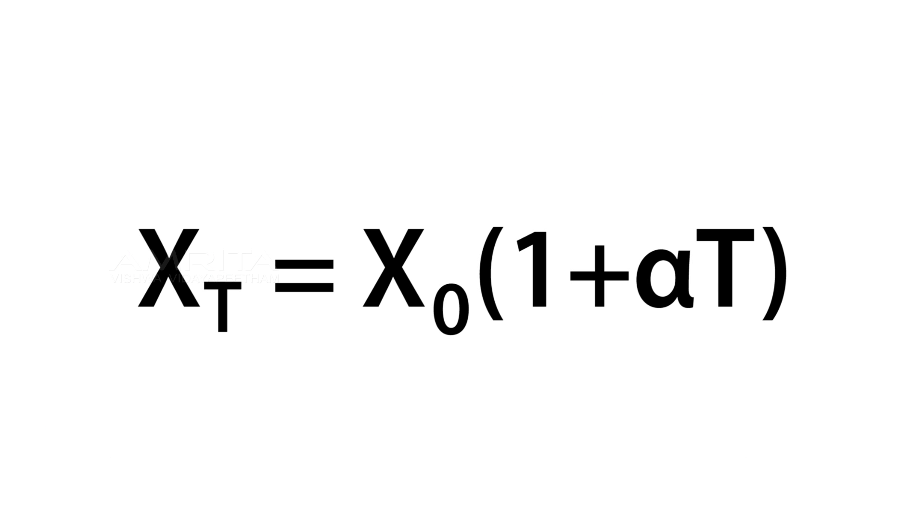From the graph, we can find out the temperature coefficient of resistance alpha using the relation X_T equals X_0 times 1 plus alpha T.